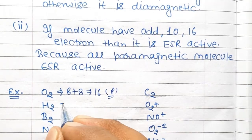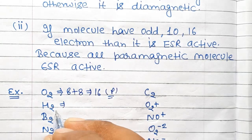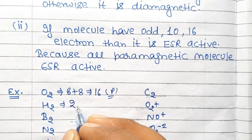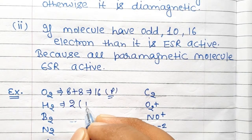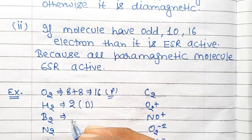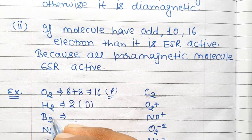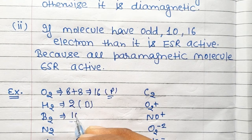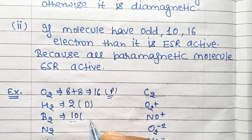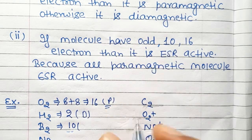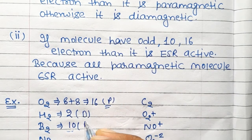For H2: one hydrogen has 1 electron, so 2 hydrogens have 2 electrons. That is even, so H2 is diamagnetic in nature. For B2: boron has atomic number 5 and there are 2 boron atoms, so the total number of electrons is 10. For 10 electrons, it is paramagnetic in nature.